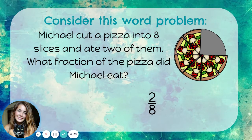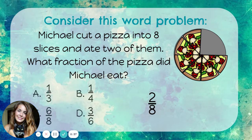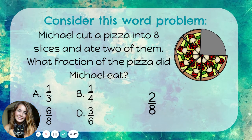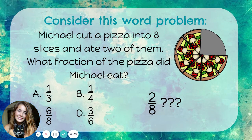But what if this was a multiple choice problem, and these were the answer choices? I'm pretty sure two-eighths is the correct answer, but I don't see it listed as an answer choice. What's going on here? In this problem, the answer choices are written in simplest form. We need to understand how to simplify or reduce a fraction in order to find it in the answer choices.